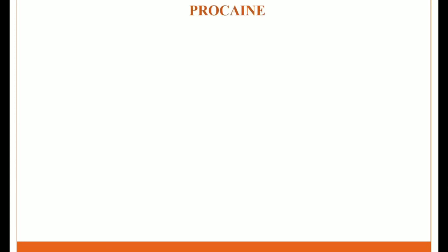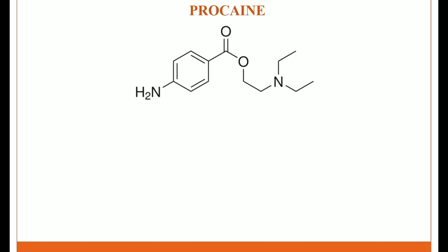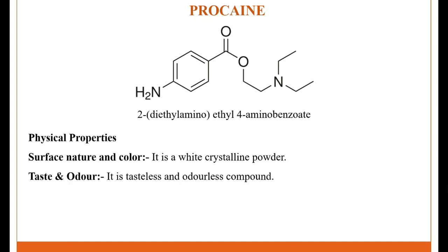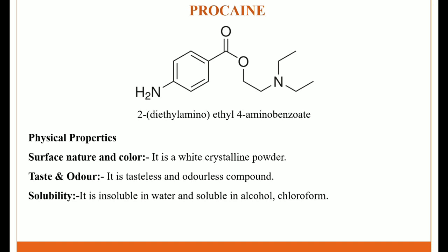The next local anesthetic agent is procaine. The IUPAC name is 2-(diethylamino)ethyl 4-aminobenzoate. Physical properties: surface nature and color — it is a white crystalline powder. Taste and odor — it is tasteless and odorless. Solubility — it is insoluble in water and soluble in alcohol and chloroform.